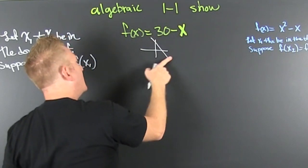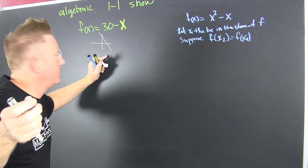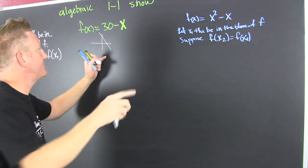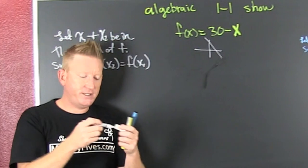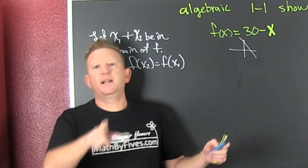So it passes the horizontal line test. So we're going to do something like what we want with the horizontal line. Yeah, horizontal line test. What's that say? For each second element, there corresponds exactly one first element.